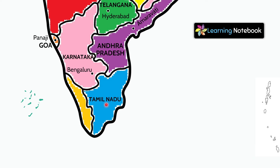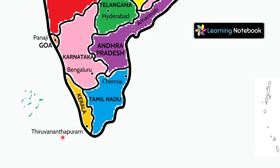This Indian state is Tamil Nadu and its capital is Chennai. This is Kerala and its capital is Thiruvananthapuram.